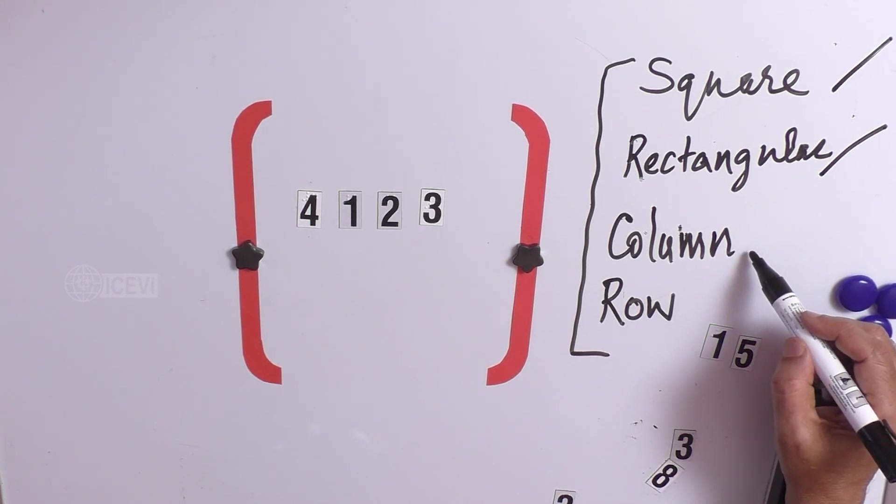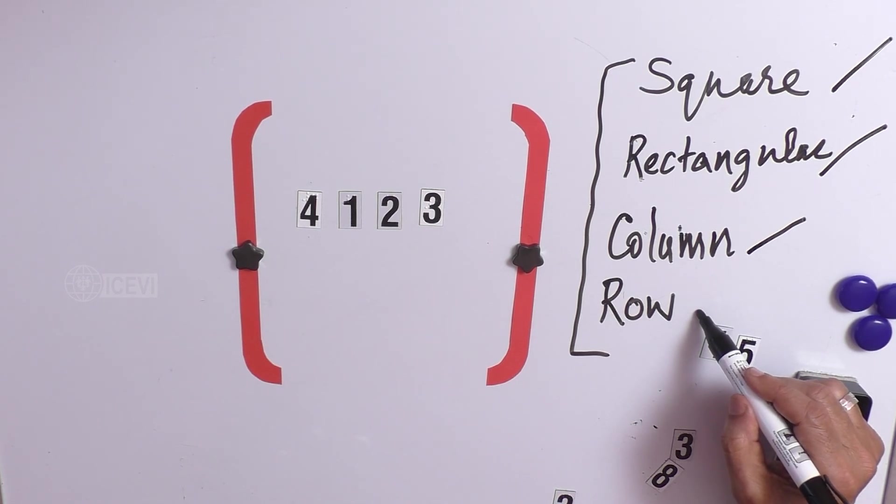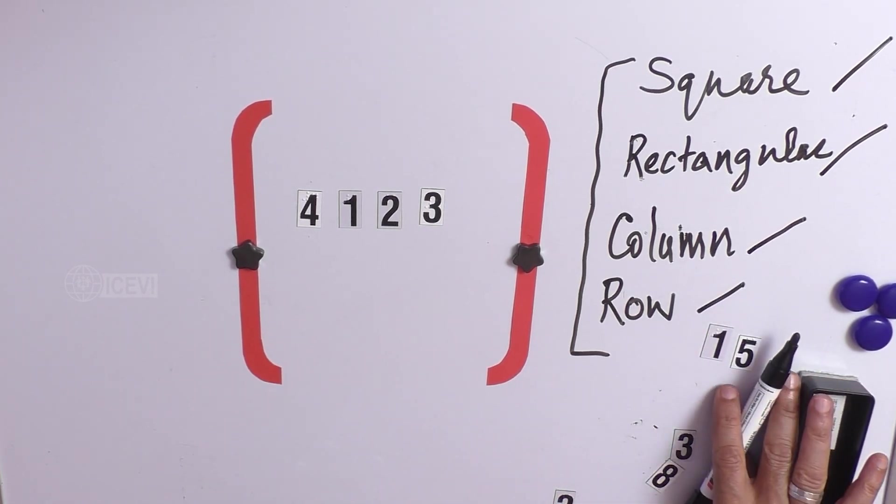And when we have only one column, we call that as a column matrix. When we have only one row, we call that as a row matrix.